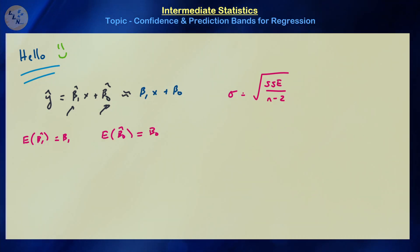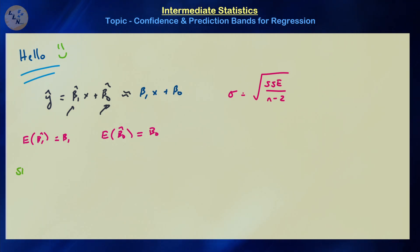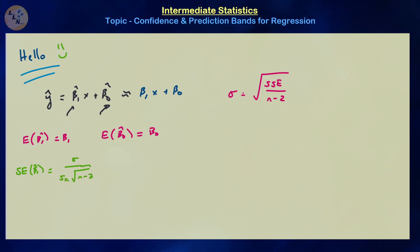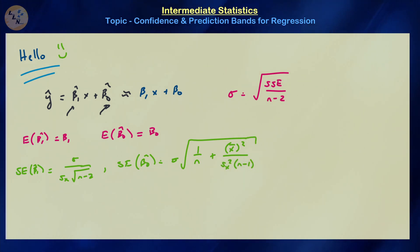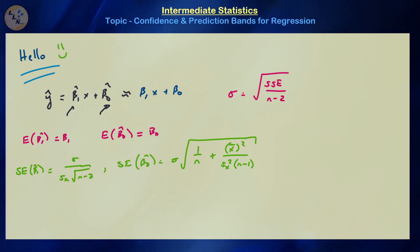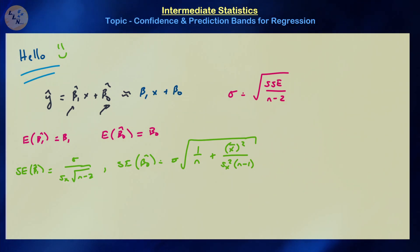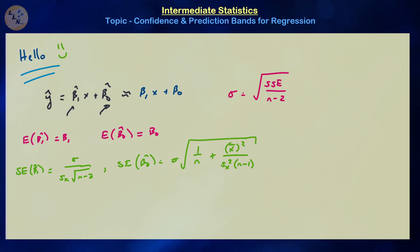Because β̂₁ and β̂₀ are unbiased estimators, it's reasonable to consider the standard error associated to each of them. The standard error for β̂₁ is σ divided by the standard deviation of the control variable times √(n−2). The standard error for β̂₀ is σ times the square root of 1/n plus the average of the control variable squared divided by the variance of the control variable times (n−1). These standard errors allow us to form t-based confidence intervals centered around β̂₁ and β̂₀.